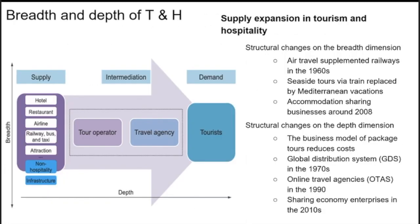Now let's go into the breadth and depth of tourism hospitality. This is very important to remember because you might be asked to place a specific firm or company into one of these sectors. The breadth is focused on the supply side — all companies related to hospitality and tourism like hotels, restaurants, airlines, as well as non-hospitality infrastructures, because tourists also spend money at stores and go shopping.